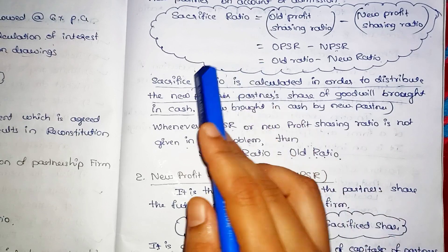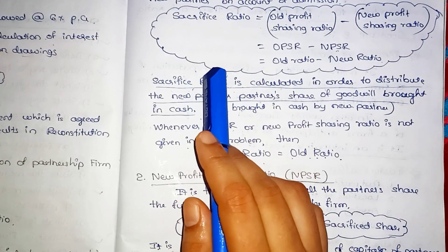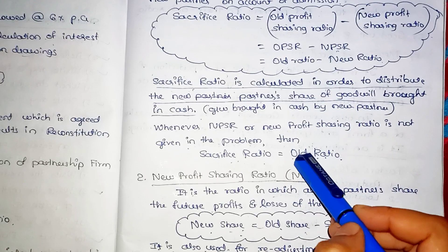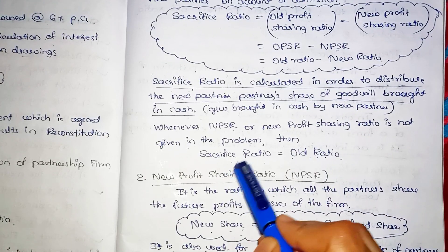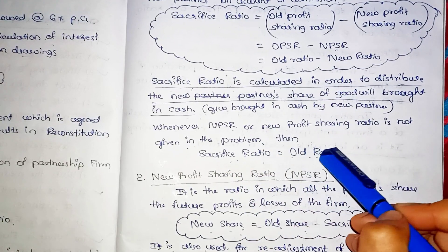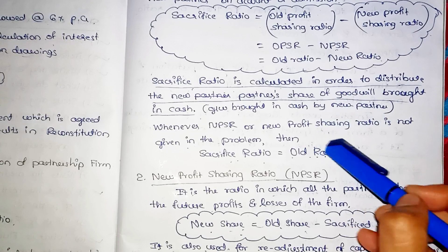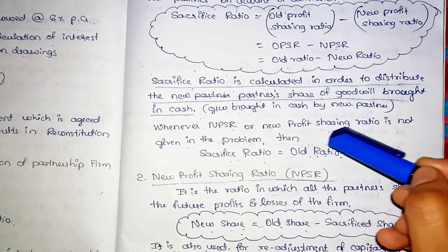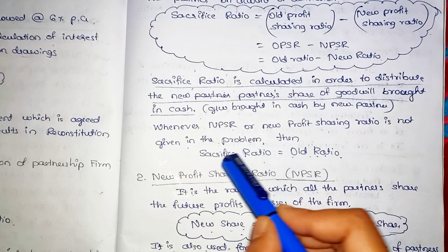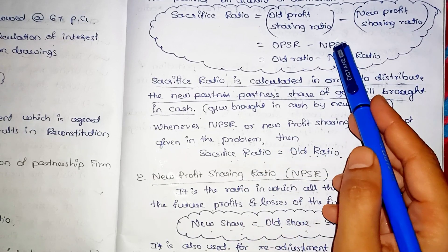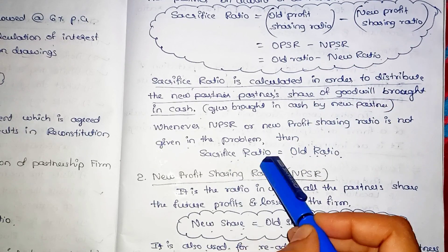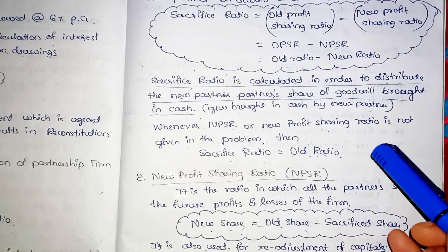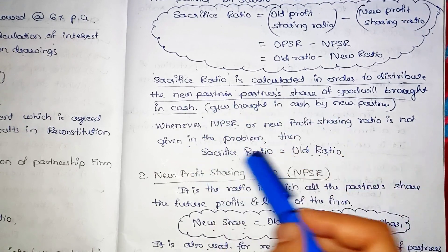In that situation, Sacrifice Ratio is used for compensation or distribution. When you use new ratio, old ratio is compared to get the sacrifice ratio. In almost all 12-mark problems, goodwill is distributed using the sacrifice ratio - that is the old ratio compared with the new ratio.